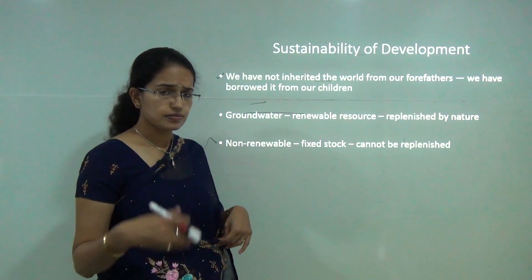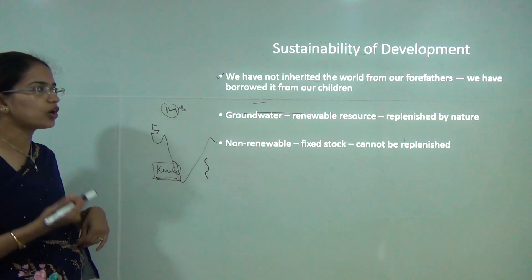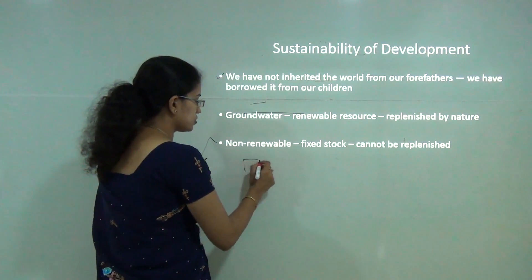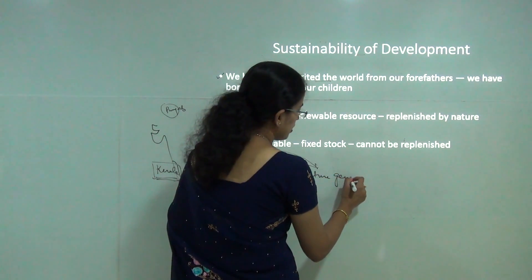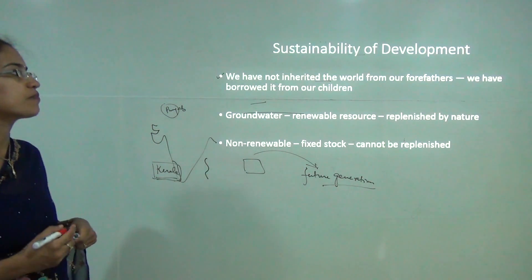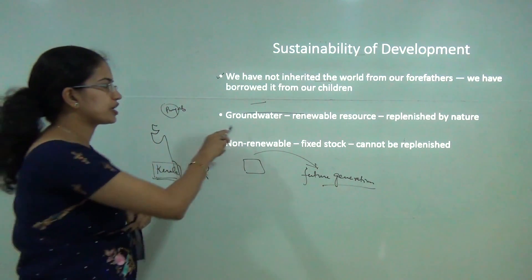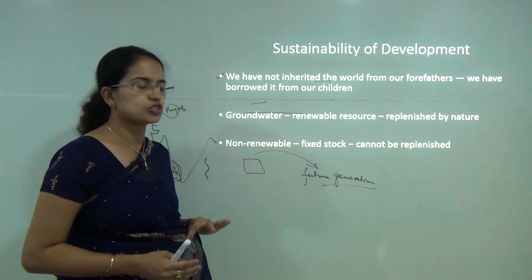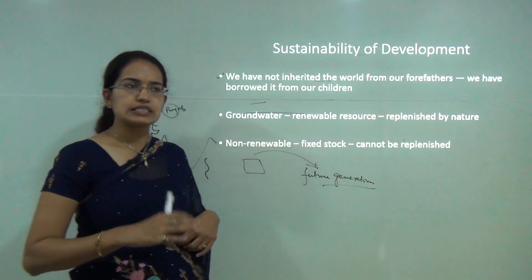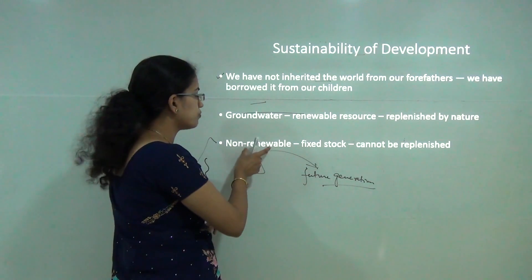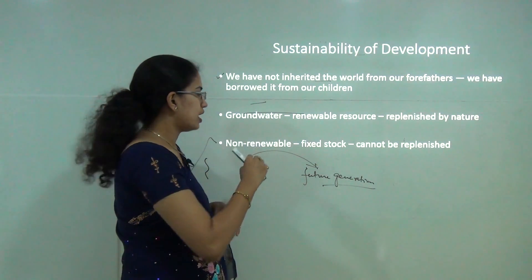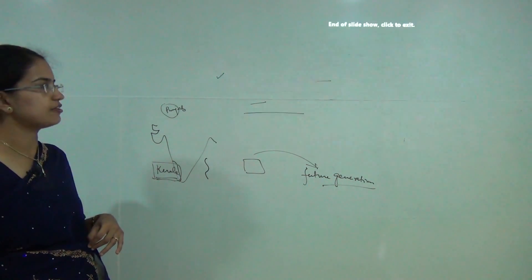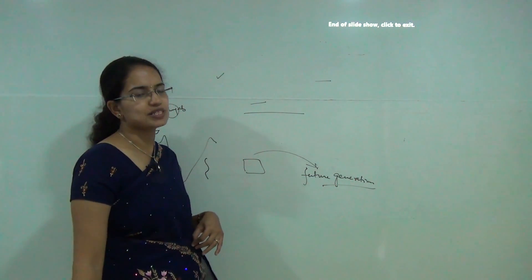When it comes to sustainability of development, we say we have not inherited the world from our forefathers — rather, we have borrowed it from our children. That means we need to preserve and conserve resources so they can be used by future generations. Groundwater is a renewable resource and can be replenished by nature. However, certain resources like oil and petroleum are non-renewable and available in fixed stock — once depleted, they are gone. We need to make intelligent use of non-renewable resources. This is what we discuss under the sustainability of development. With this, we have covered the first chapter of economics.